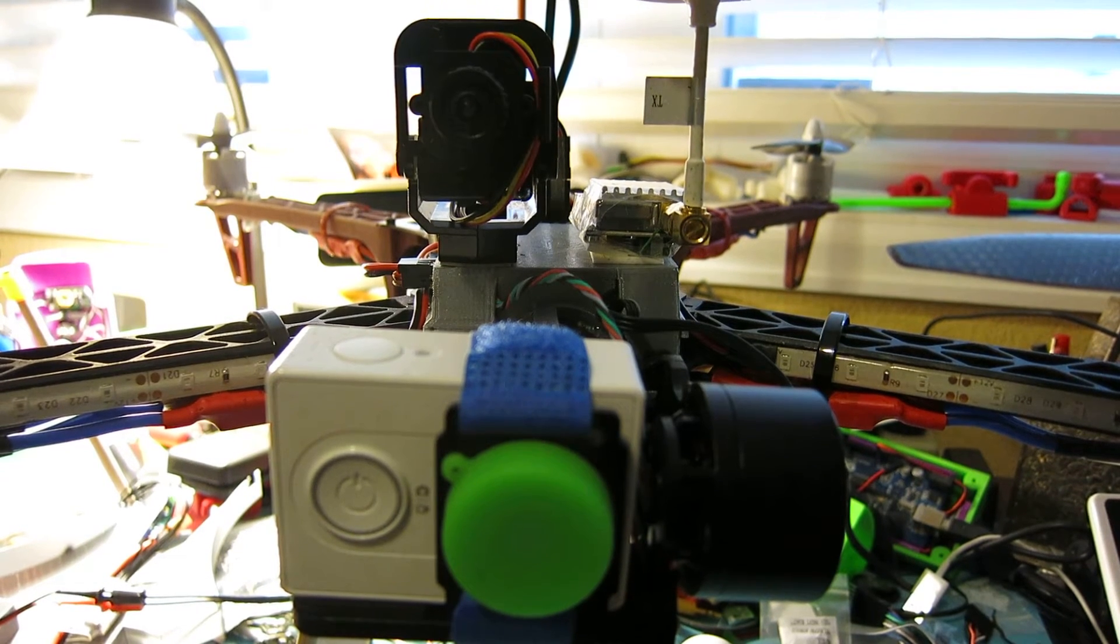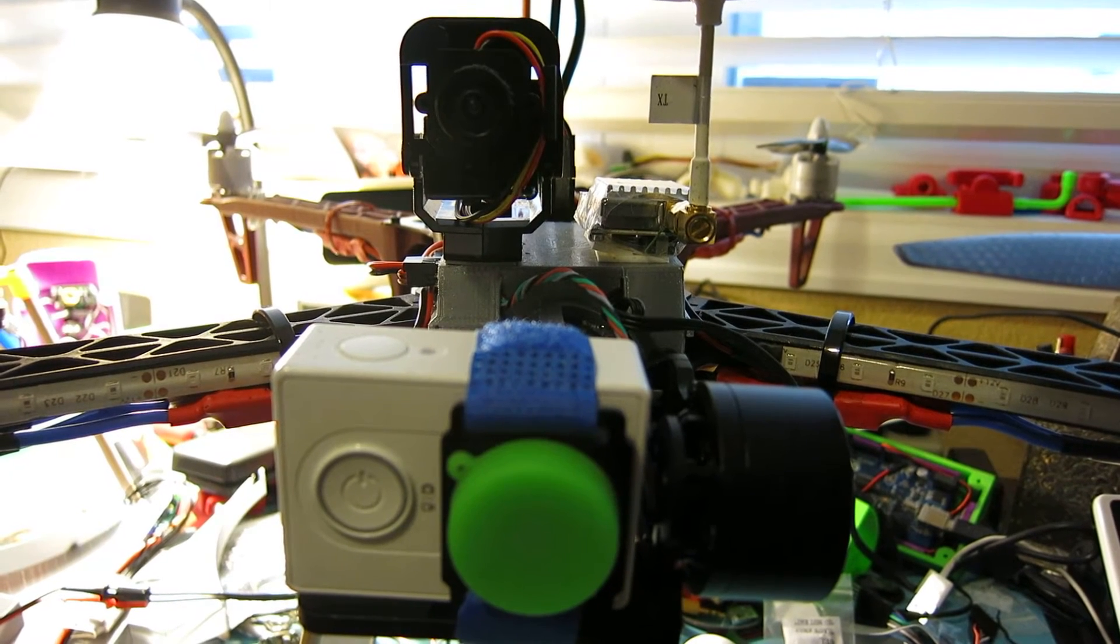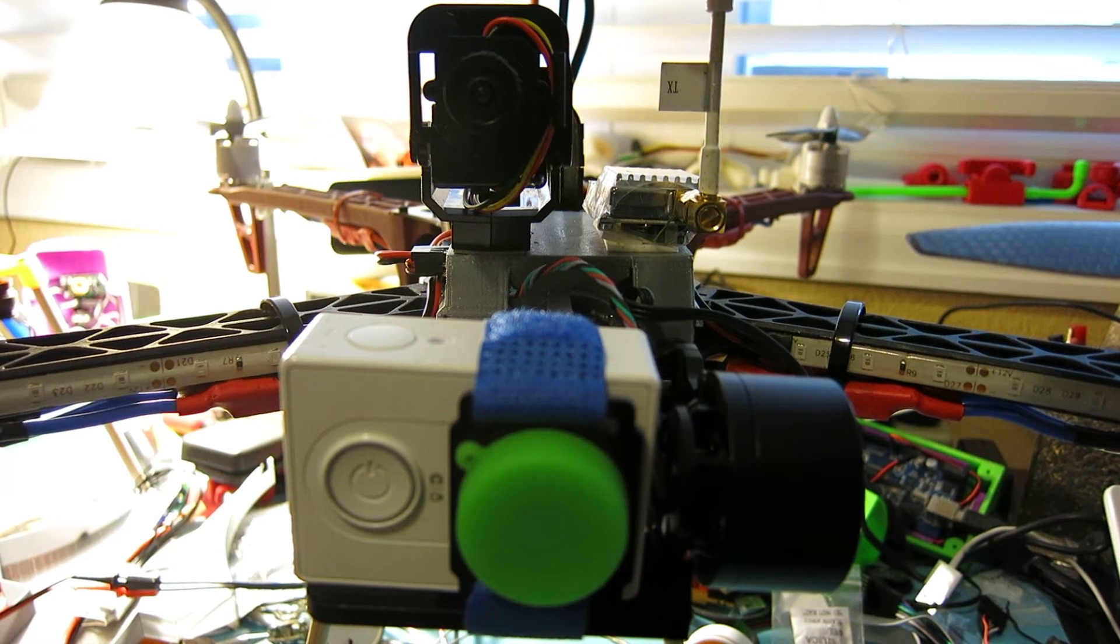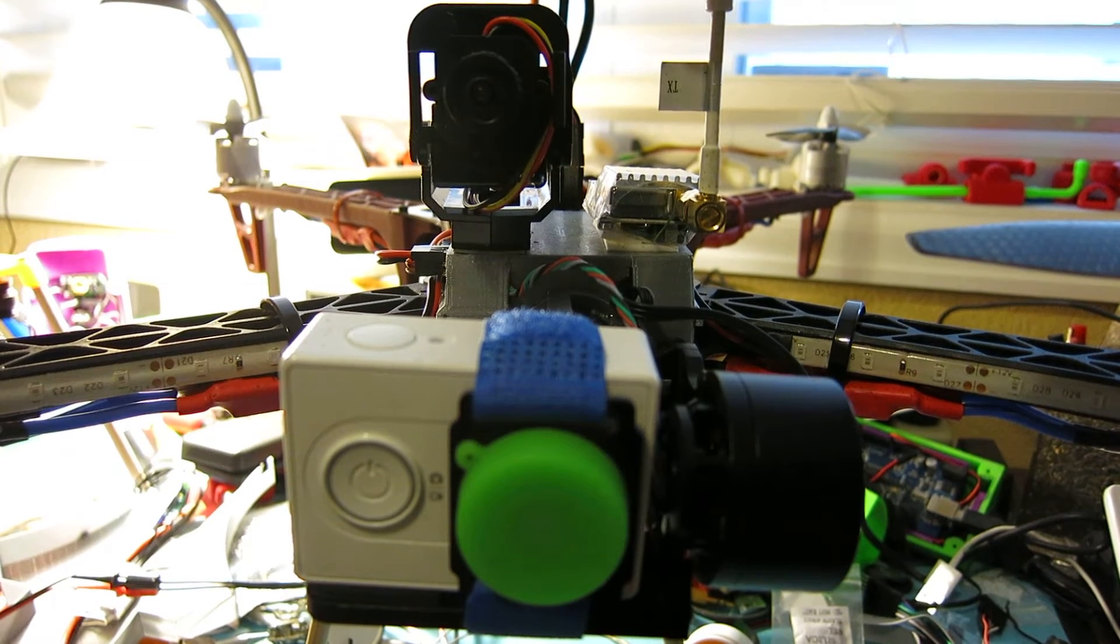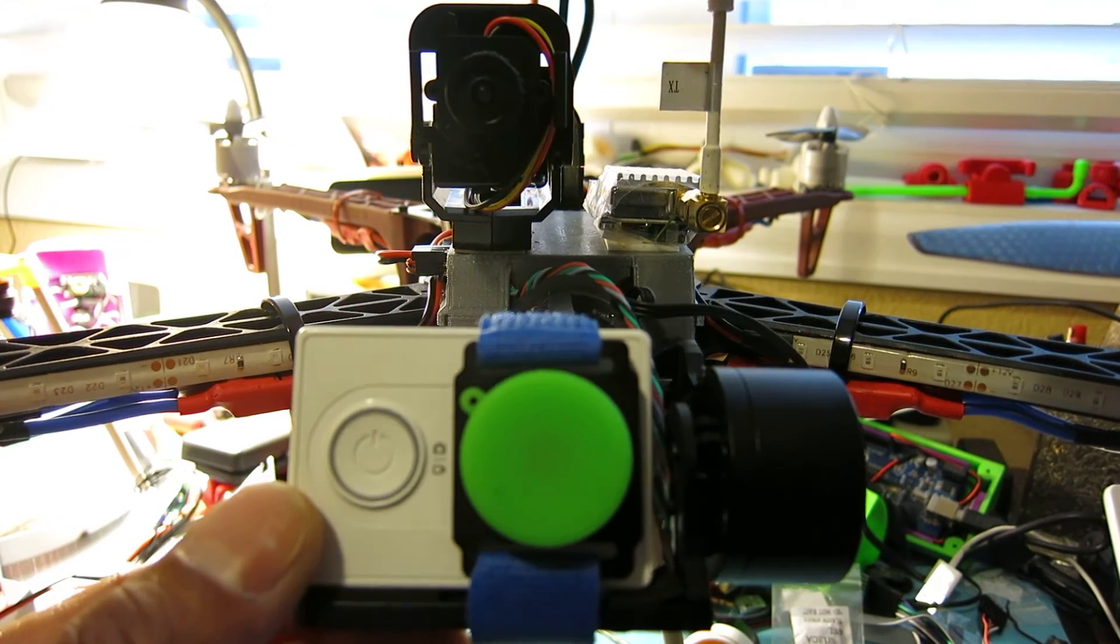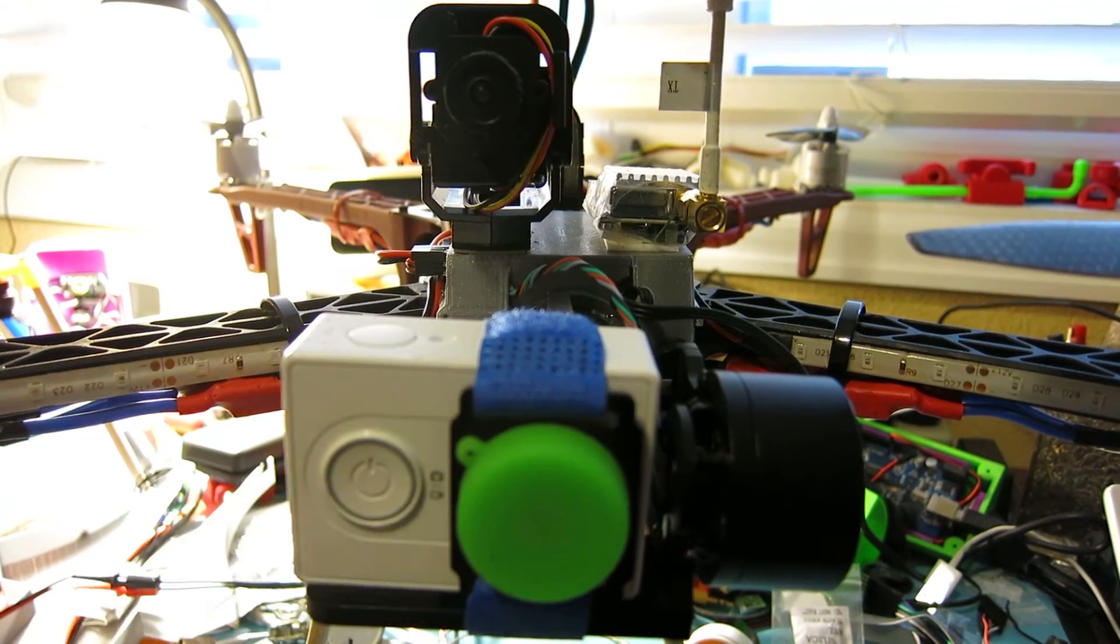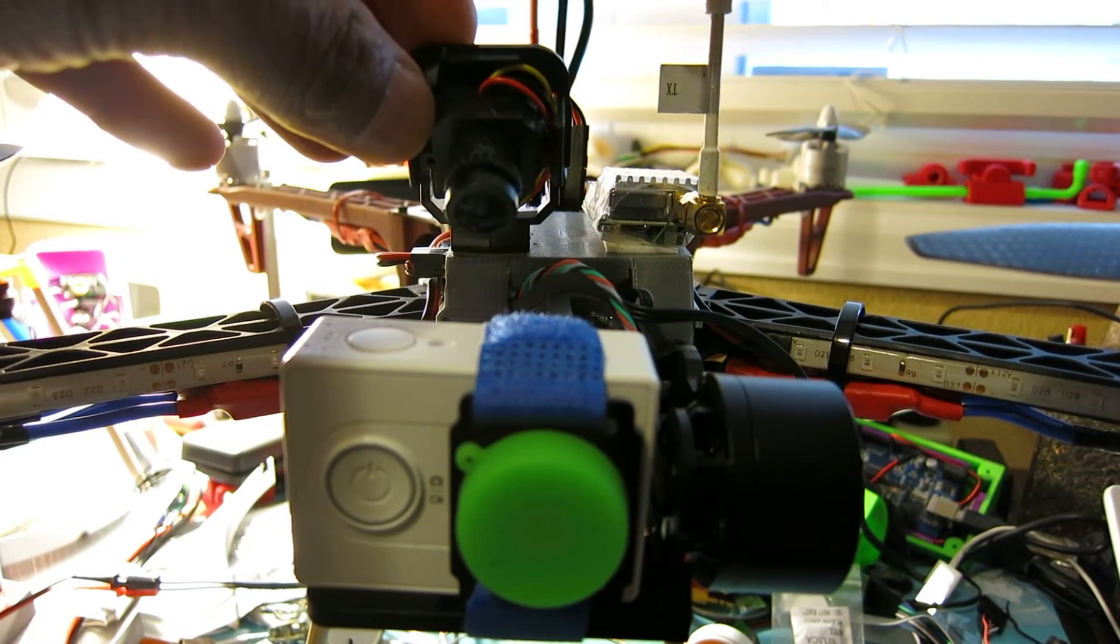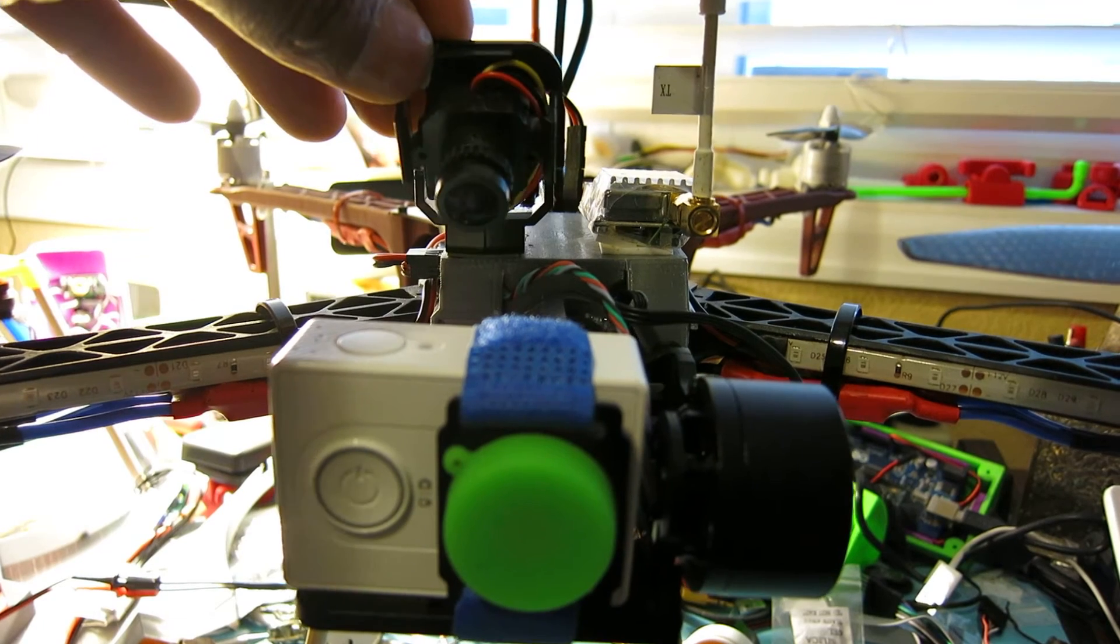So in front of me I have my Reptile 500 quadcopter, and I have my Xiaomi Yi camera mounted up on the gimbal. On top of that I have my FPV camera, and I'm able to switch back and forth between these cameras using a video switcher.